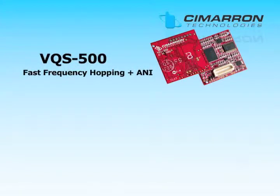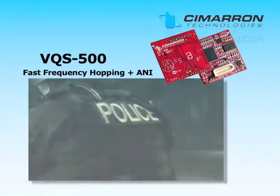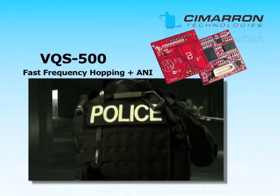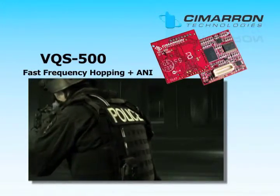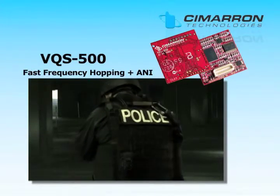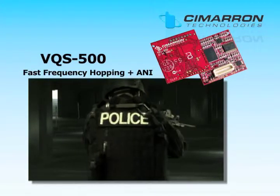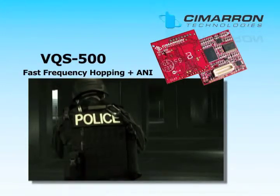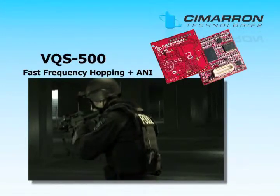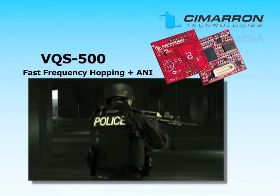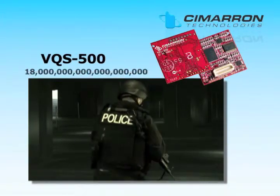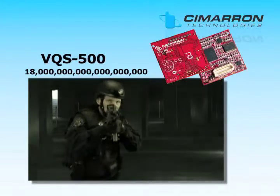The VQS-500 is our highest level encryption board. The VQS-500 includes all of the features of the VQS-400 and VQS-420 but adds fast frequency hopping. In this mode, the inversion point is changing 10 to 100 times per second. The algorithm for how far and how fast to move the inversion point is protected by an encryption key with over 18 quintillion possible codes.